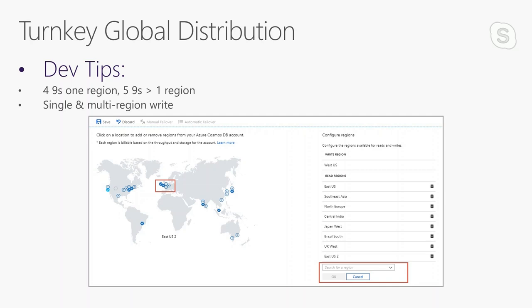You also want to consider whether you want single-region writes or multi-region writes, and these may vary based on your scenario. For a read-heavy application, you can ingest data with a single-region write — for instance, writing in East US and distributing globally. When someone in Australia reads data, Cosmos DB uses multi-homing APIs to connect to the nearest instance in Australia. For multi-region writes, if clients all over the world need to write data, they write to their local instance and it syncs up over time.